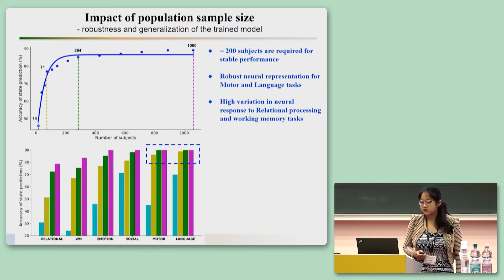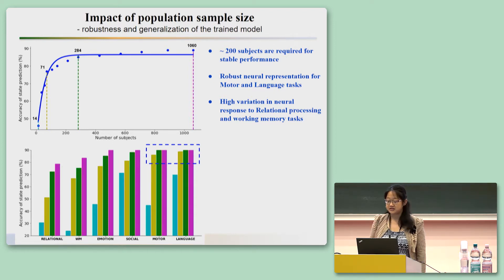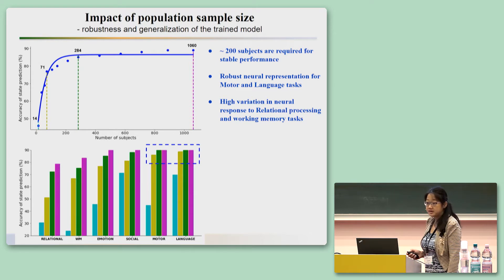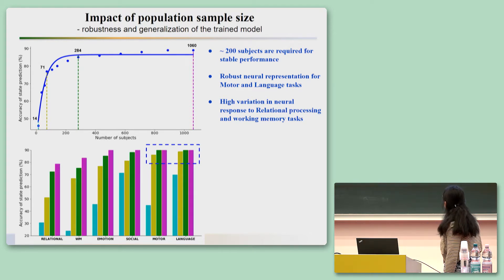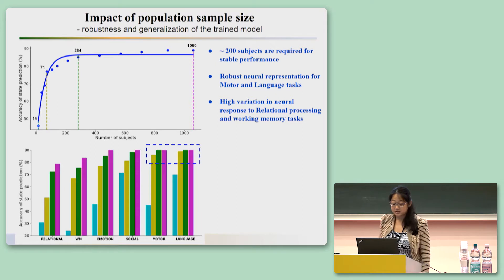The second factor we explored was sample size. We found we do not need all 1,200 HCP subjects — with around 200 to 300 subjects, the model achieves very stable performance. For tasks identified as easier, such as motor and language tasks, as few as 70 subjects yield very good results.